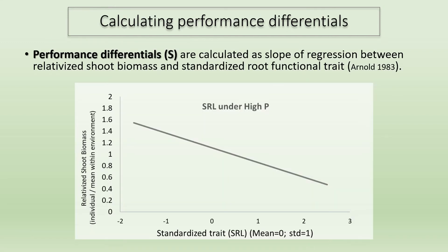Now let's look at my performance selection results. Selection on a trait is given by the performance differential, calculated by the slope of the regression between standardized root trait — the independent variable — and relativized plant biomass — the dependent variable. For example, this would be my predicted regression for specific root length under high phosphorus, where I'm predicting a negative correlation, because I'm expecting that under high phosphorus, plants with lower specific root length should perform better compared to those with higher SRL.